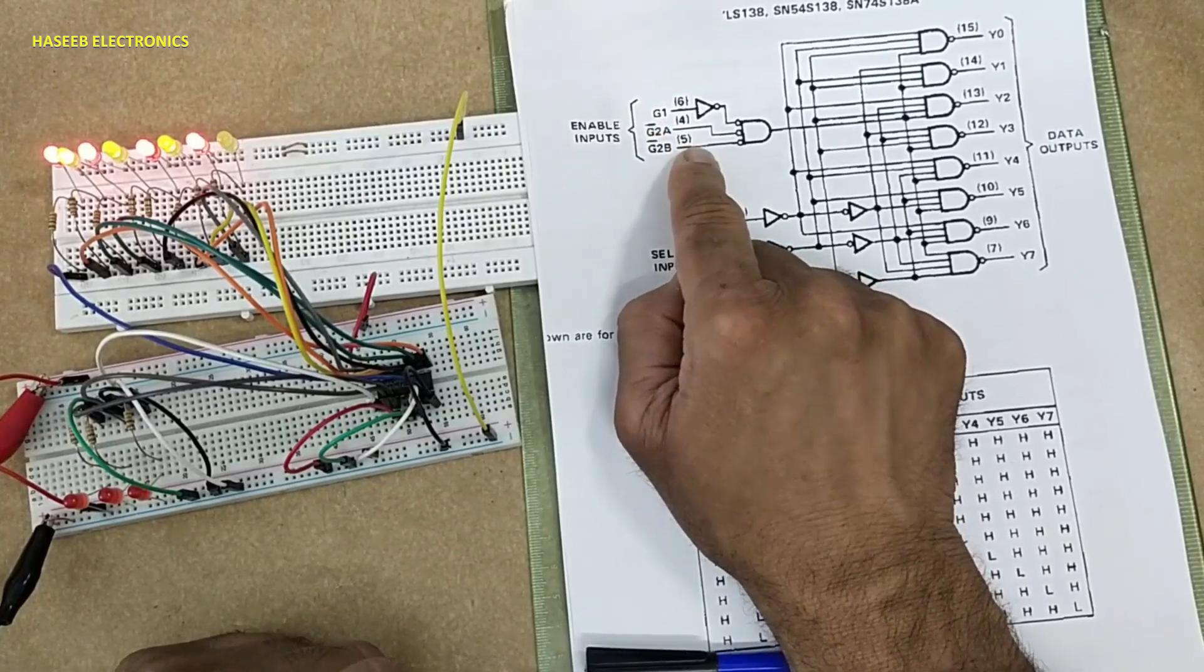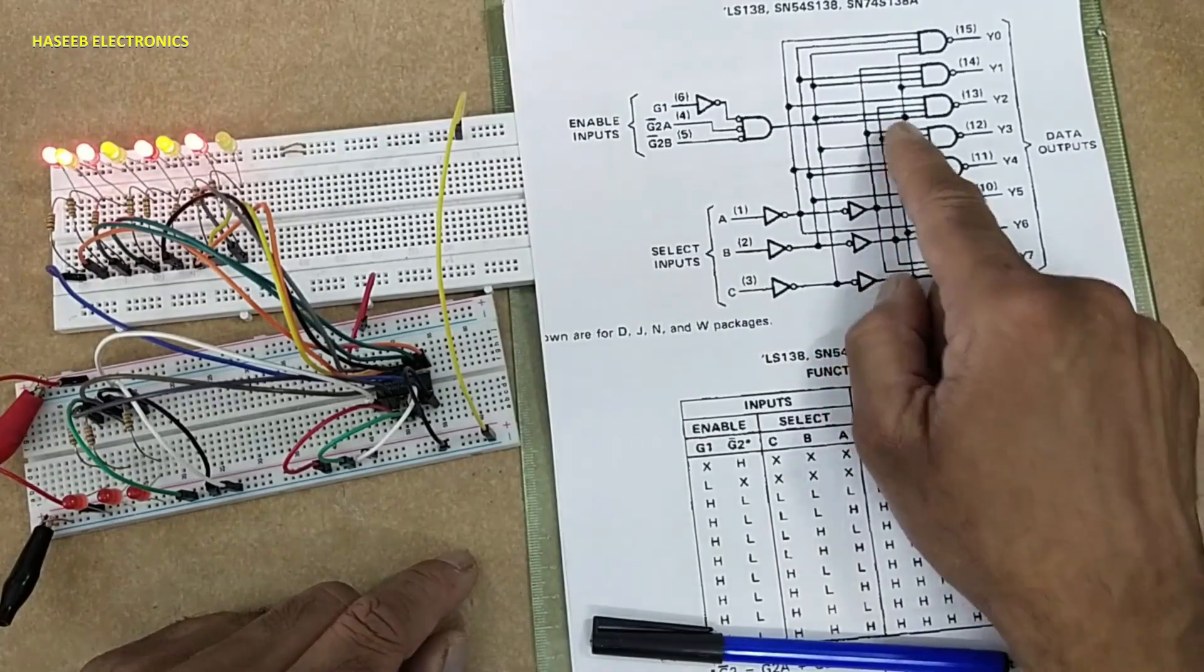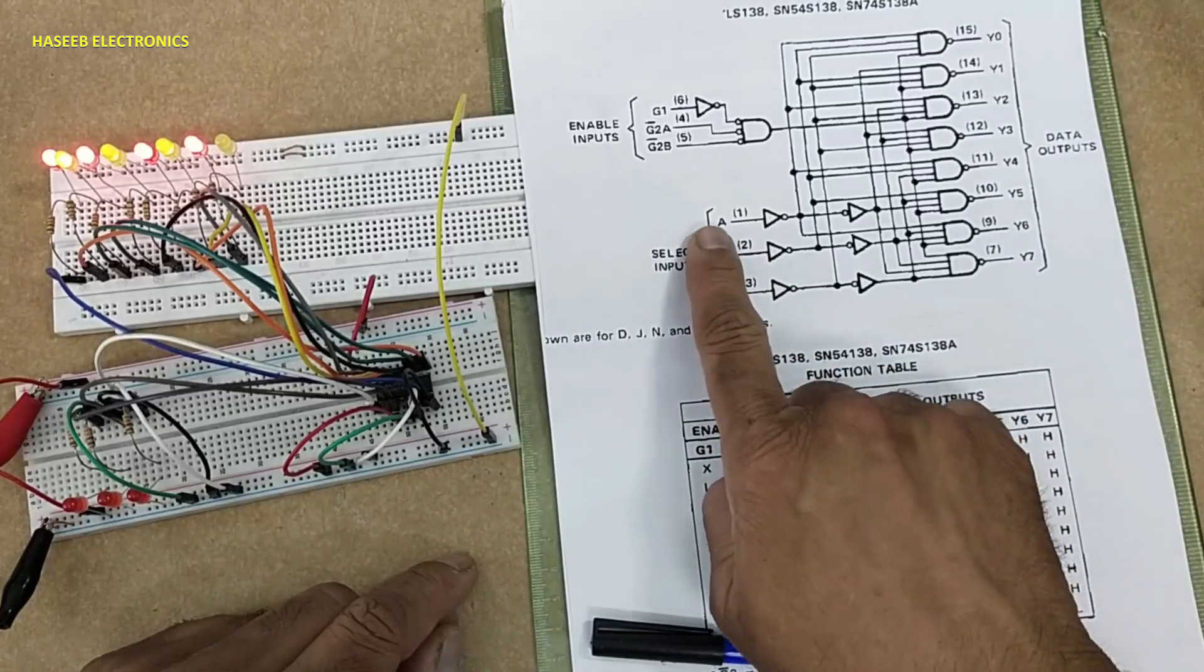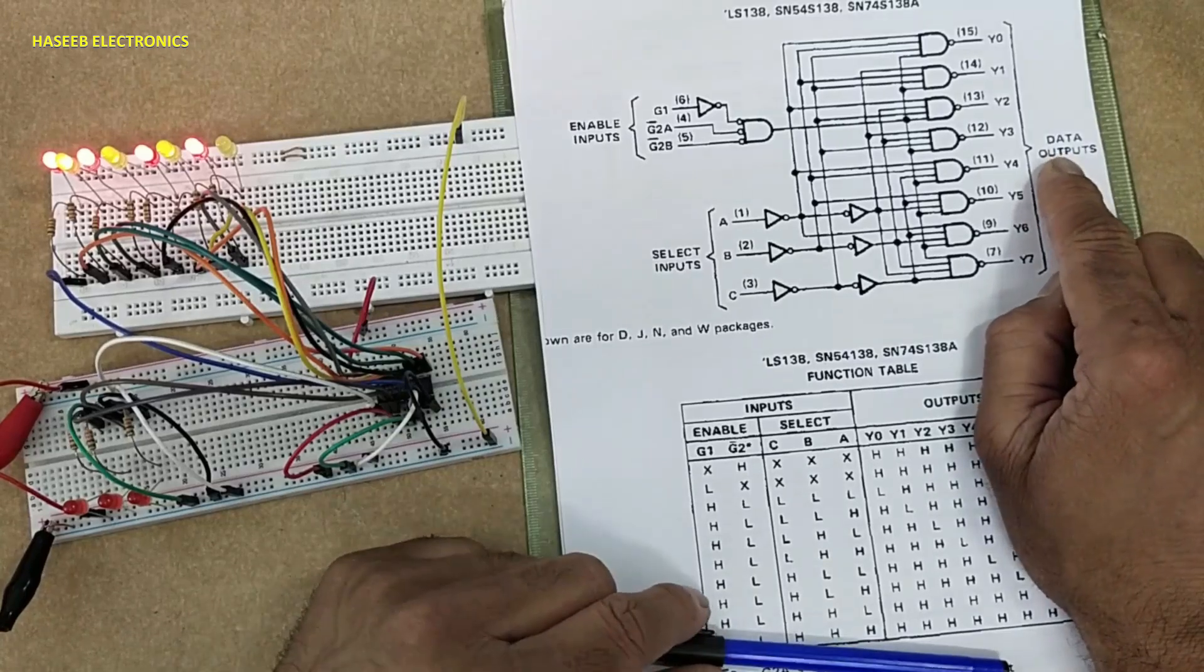Based on these logic gates, it is necessary to put pin number six high, and pins four and five must be low. Then it will start decoding. Here are three inputs: pin numbers one, two, three—A, B, C—and then we have data outputs.